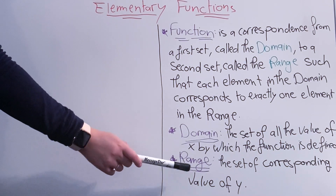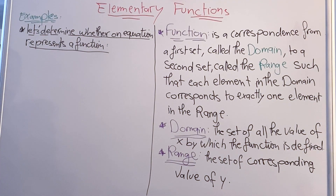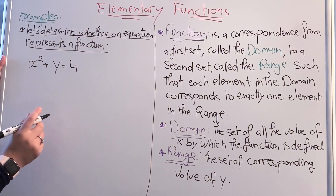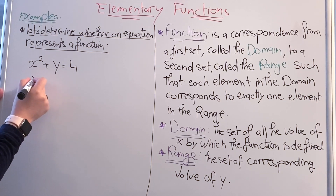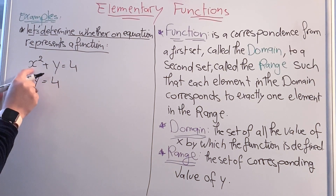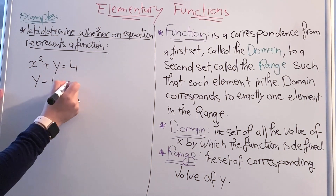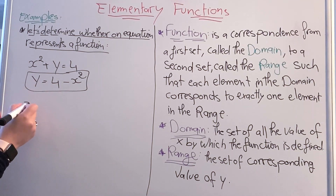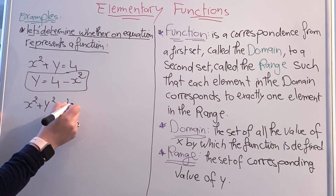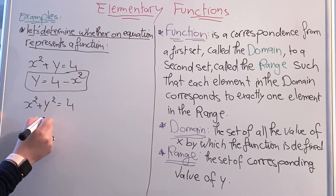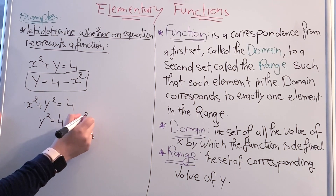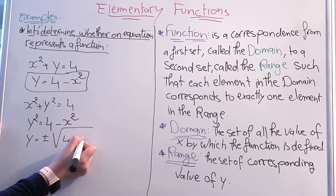First, let's determine whether an equation represents a function. For example, x squared plus y equals 4. To write it as a function, we rearrange to get y equal to 4 minus x squared. For another example, x squared plus y squared equals 4. We rearrange to get y squared equal to 4 minus x squared, so y equals plus or minus the square root of 4 minus x squared.